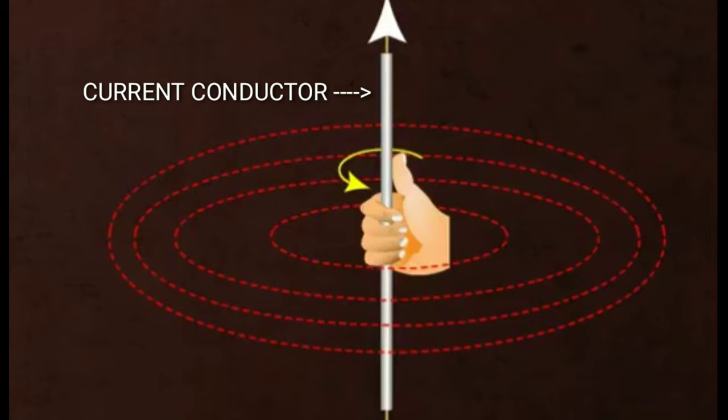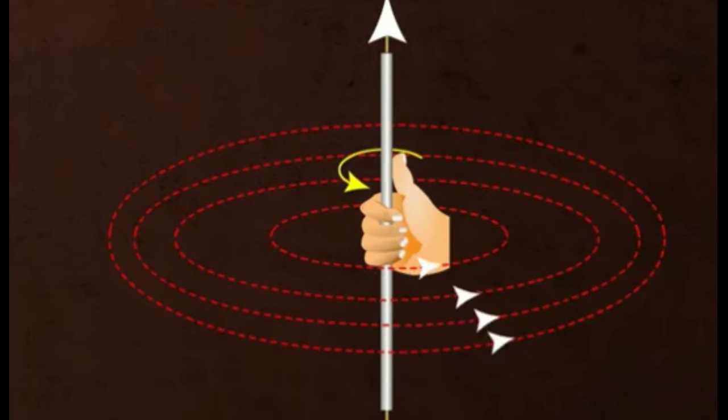Means, if we hold a current carrying wire in right hand such that thumb points towards the direction of current, then the curl of the wrapped fingers will give the direction of the produced magnetic field.